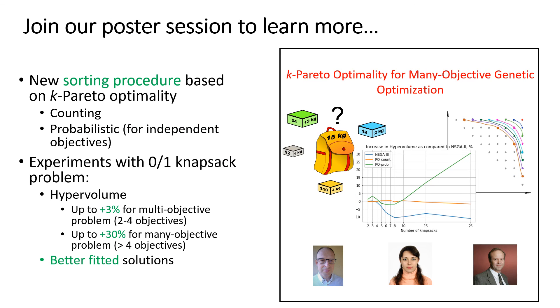To conclude, in this work we proposed a novel sorting procedure based on Pareto optimality. Our experiments with 0-1 knapsack problem demonstrate that it allows to increase the value of hypervolume by up to 3 percent for multi-objective optimization and up to 30 percent for many objective cases. Additionally, our approach results in better fitted solutions as compared to NSGA-II and NSGA-III. Please join our poster session to learn more.